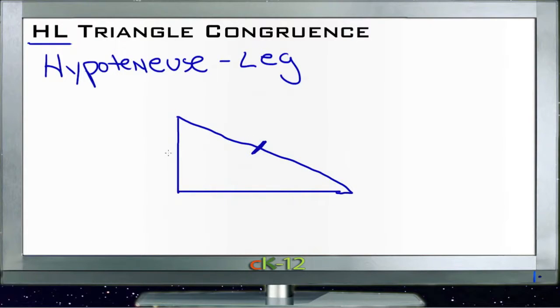And we know either one of the two legs, so either this one or this one, and we know that the triangle is a right triangle...